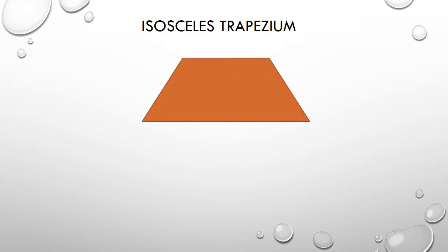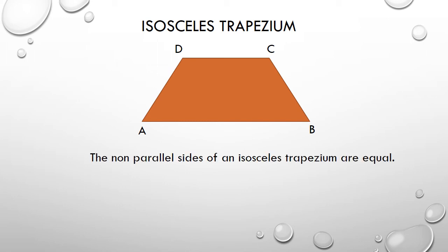Now, let us learn what is meant by an isosceles trapezium. Let us consider the figure ABCD. ABCD is a trapezium where AB is parallel to CD. If the sides AD and BC are equal, then it is known as an isosceles trapezium. That is, if the non-parallel sides of a trapezium are equal, then it is known as an isosceles trapezium. Here, the side AD is equal to the side BC. Hence, ABCD is an isosceles trapezium.